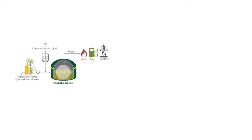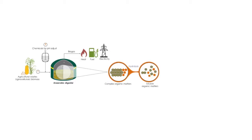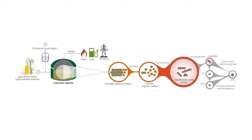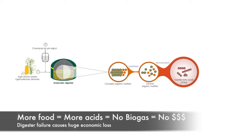As shown in this illustration, an anaerobic digester can digest complex organic matter into soluble organic matter, then start fermentation to create volatile fatty acids (VFA), which serve as substrate for producing methane or biogas. However, when there is too much VFA accumulation, there is no biogas production, no energy created, and in severe cases it may require restarting the digester, causing huge economic loss for the biogas plant.